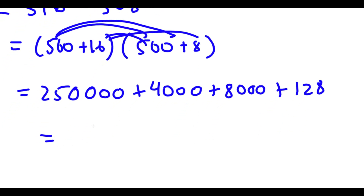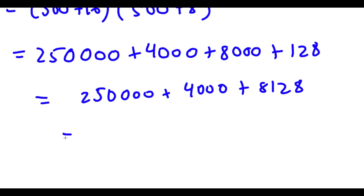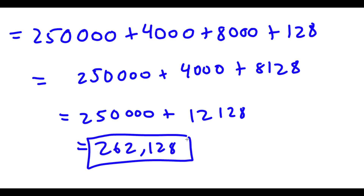Now I'm going to add all of these. So 8,000 plus 128 is 8,128. And 4,000 plus 8,000 plus 128 is 12,128. And now 250,000 plus 12,128 is 262,128. So this is our answer.